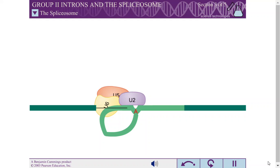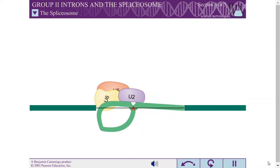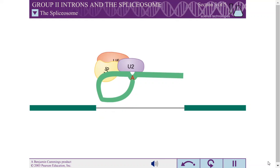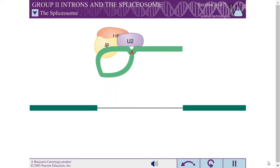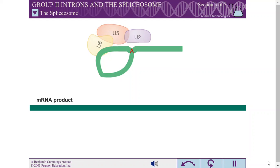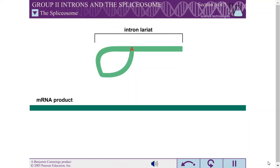U5 helps bring the 5' and 3' splice sites together, facilitating the second transesterification reaction. The spliceosome then releases the mRNA product and the intron lariat. Note: in reality, the 5' and 3' splice sites are much closer together for this reaction.